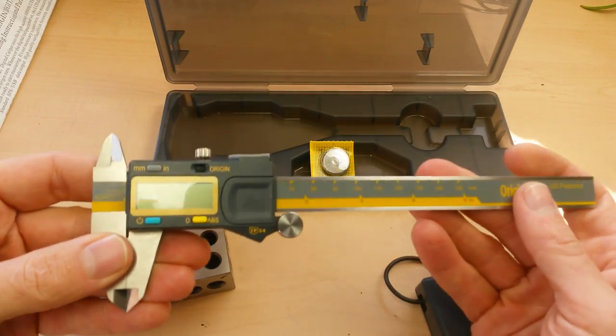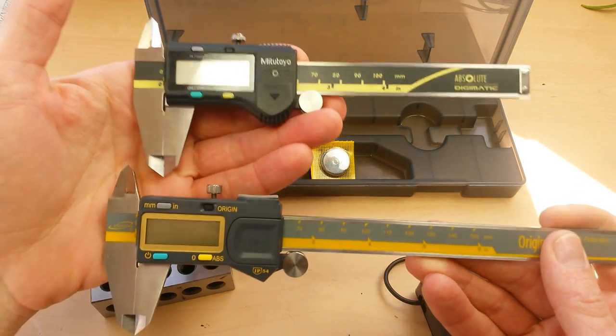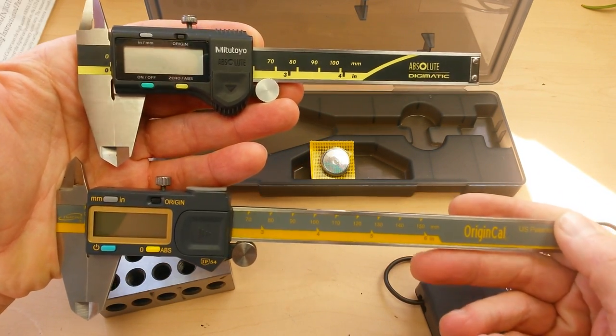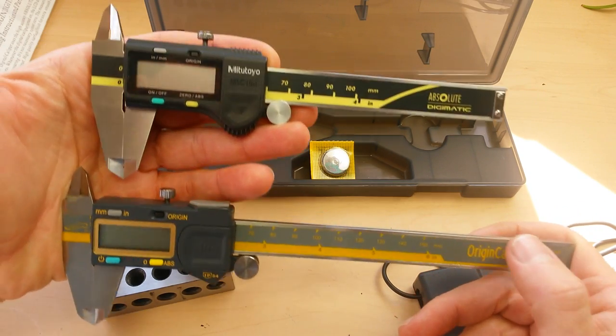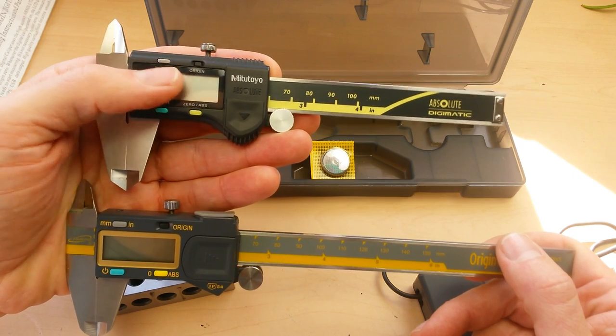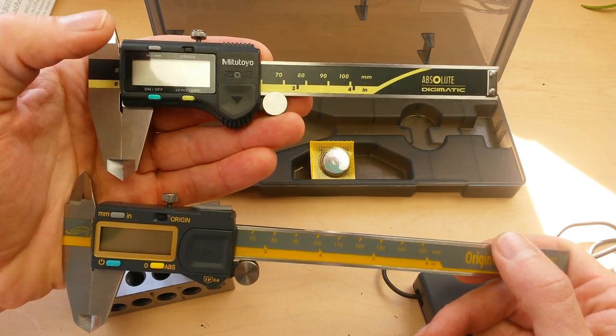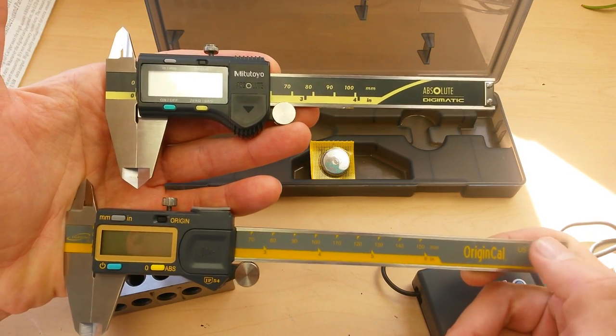Looking at the caliper itself, it's very similar in form, function, and design to the Mitutoyo Digimatic Absolute Origin digital caliper. In fact, you can tell that they based the design of the Origin Cal right off of the Digimatic. Mitutoyo's got this design down, and there's only a few things they could improve upon, and they actually did improve upon the battery compartment design on the Origin Cal.